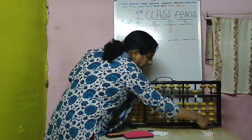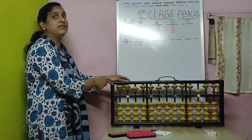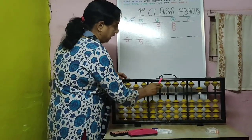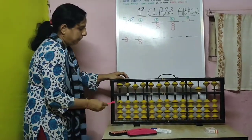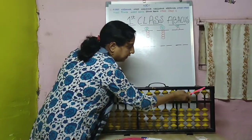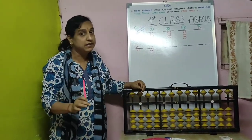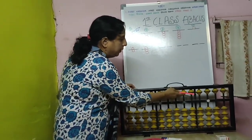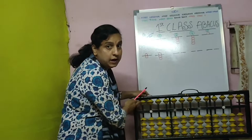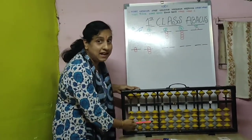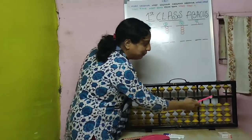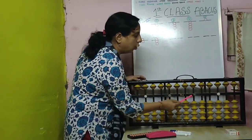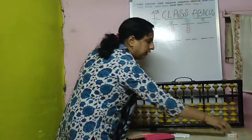This is the frame of the Abacus. This is the divider. These are upper beads and these are lower beads. This is the divider and these are the home points — the white dots are there.